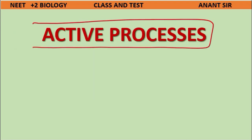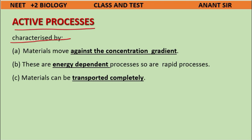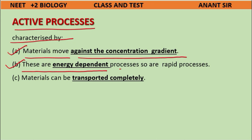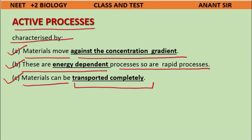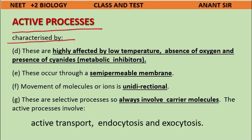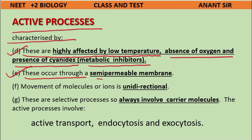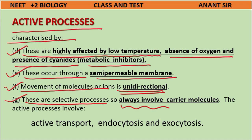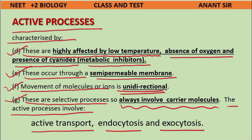Active processes are characterized by: A) materials move against the concentration gradient; B) they are energy-dependent and thus rapid; C) materials can be transported completely; D) they are highly affected by low temperature, absence of oxygen, and presence of cyanide (metabolic inhibitors); E) they occur through a semi-permeable membrane and movement is unidirectional; F) they are selective processes always involving carrier molecules. The active processes include active transport, endocytosis, and exocytosis.